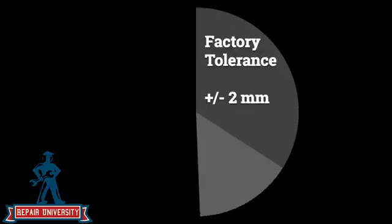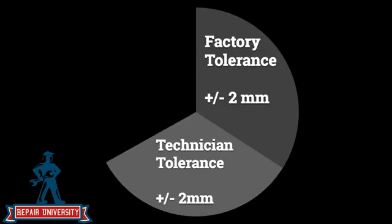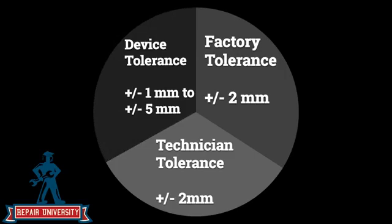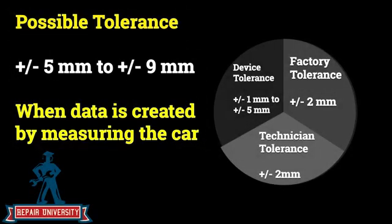On top of all of that, there's tolerance with the actual measuring system itself. So you've got a vehicle that may not match the CAD data to begin with, potential technician error from measuring a vehicle that may be slightly out of tolerance, and then the measuring equipment tolerance as well. We could have a couple of millimeters from the factory, another couple from human error, and maybe a couple more from the measuring equipment — so versus zero millimeters difference from the CAD drawing, we could be starting with five, six, seven or more millimeters of tolerance just to build the database.